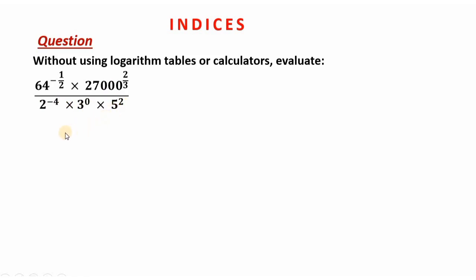In this problem, the first thing we are going to do is express some of these values — that is 64 and 27,000 — in terms of their prime factors. Expressing them in terms of their prime factors is known as prime factorization.